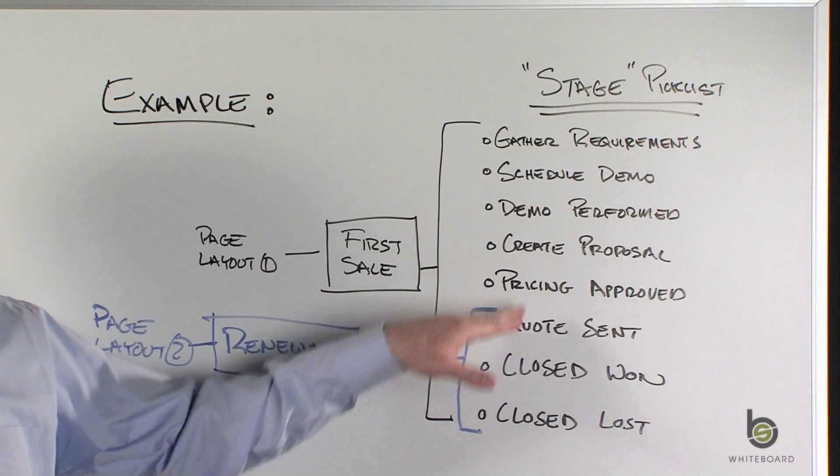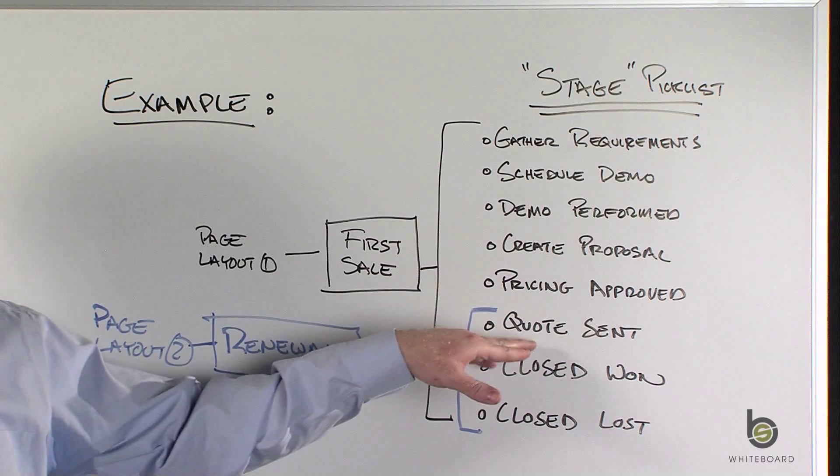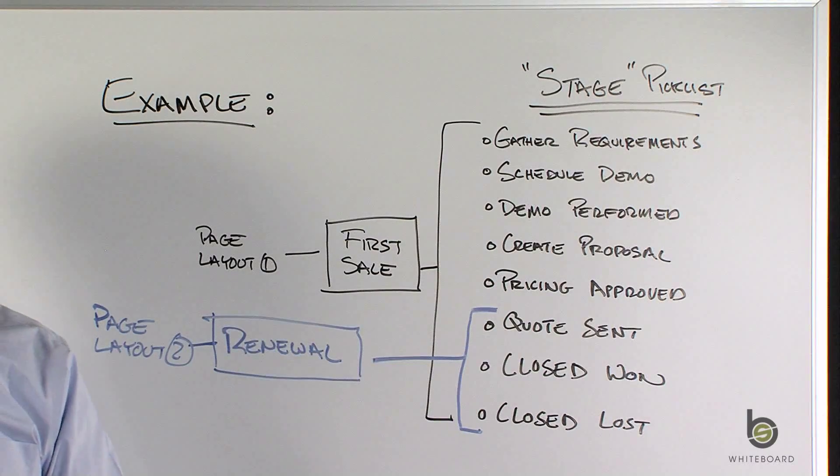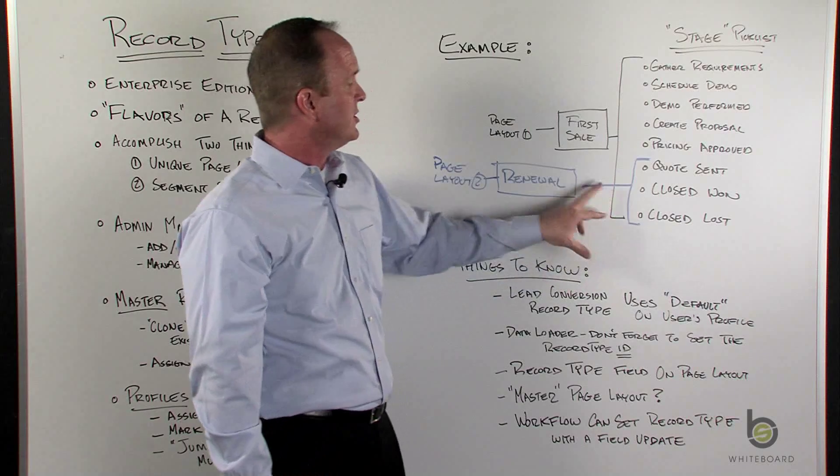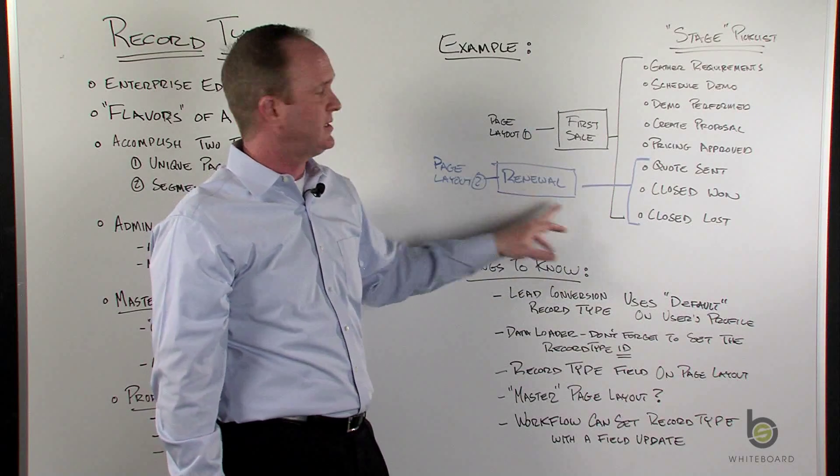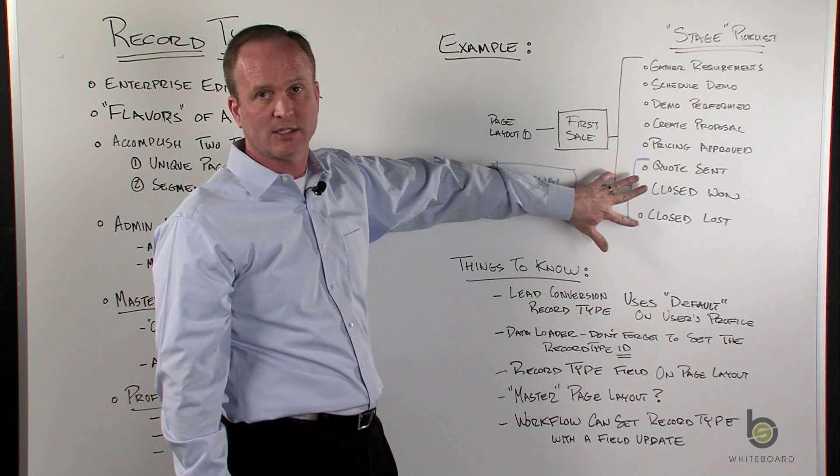So the first sale, I have to go through all these steps to get requirements, do a demo, present the pricing, won or lost the deal. But in a renewal, I already have my pricing. All I really need to do is send the quote and wait for the customer to say yes, we want it, or no, we don't.